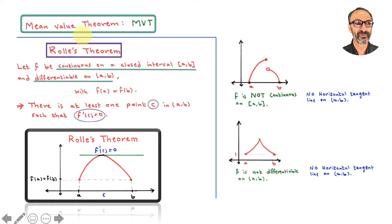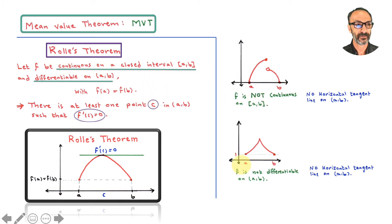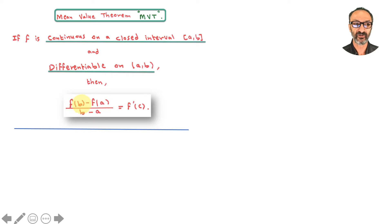Now let's move on to the mean value theorem, which is more powerful than Rolle's theorem. You could consider Rolle's theorem a special case of the mean value theorem, because the mean value theorem doesn't require F(A) and F(B) to be the same. Here's what the mean value theorem says: if F is continuous on the closed interval [A,B] and differentiable on the open interval (A,B), then we have F(B) minus F(A) over B minus A equals F'(C). Through a graph I'll explain more — this is a secant slope, and this is a tangent slope.